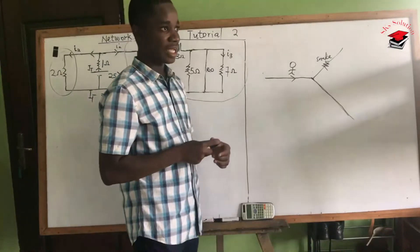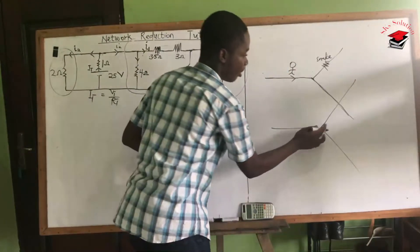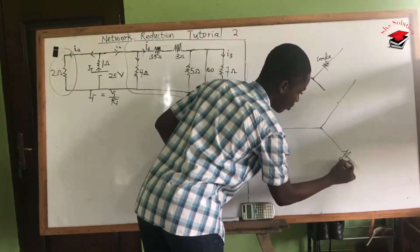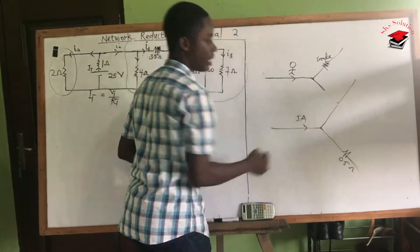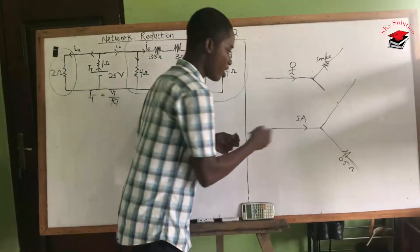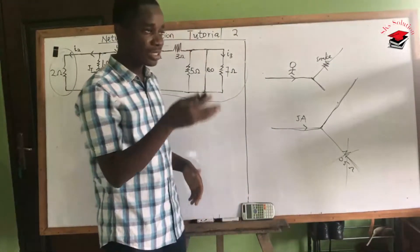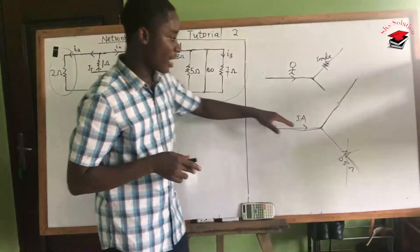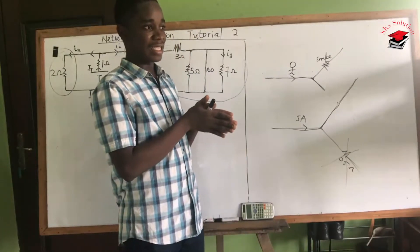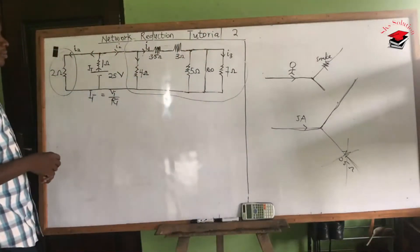The same thing applies to current. When current gets to a junction it has to split, but if one branch has zero resistance — a short circuit — and another branch has, say, 0.5 ohms, with 5 amperes coming in, all the current will end up passing through the zero-resistance branch, avoiding the other resistance. Whenever we calculate total resistance, resistors which have no current in them are not included — we only use resistors through which current actually flows.